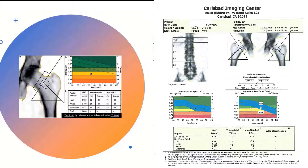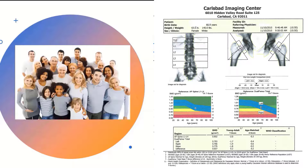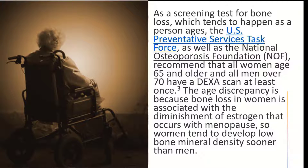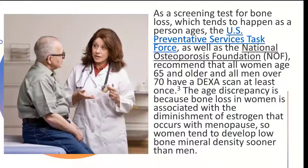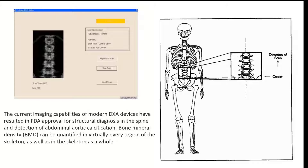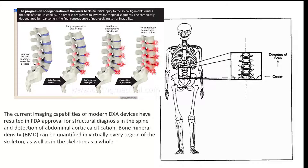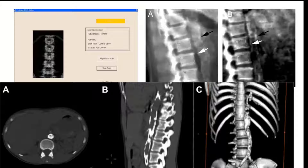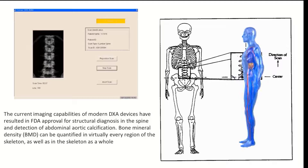As a baseline exam, it may also indicate further medical procedures that are required or needed. The age discrepancy between men and women is based upon the bone loss in women associated with the diminishment of estrogen that occurs with menopause, so women tend to develop low bone mineral density sooner than men. With the current medical capabilities of modern DEXA machines, the FDA has considered and approved an expansion of the types of examinations that can be performed, including approval for structural diagnosis in the spine and detection of abdominal aortic calcifications often associated with osteoporosis. Bone mineral density can be quantified in virtually every region of the skeleton as well as in the skeleton as a whole.